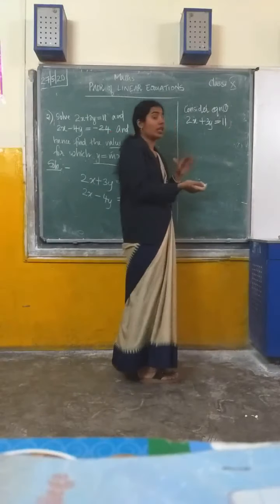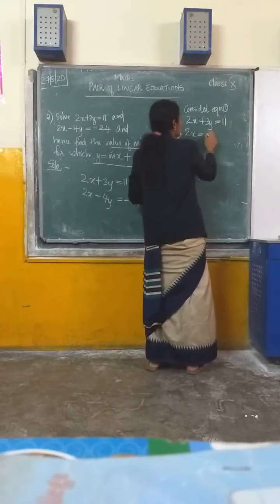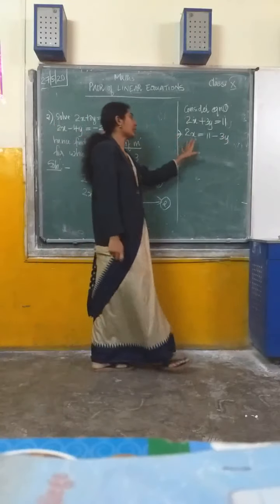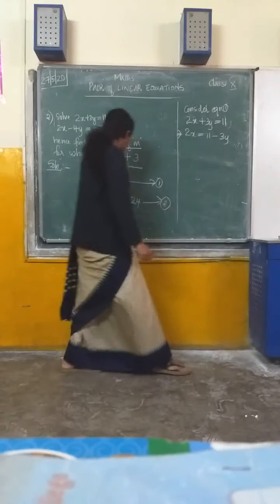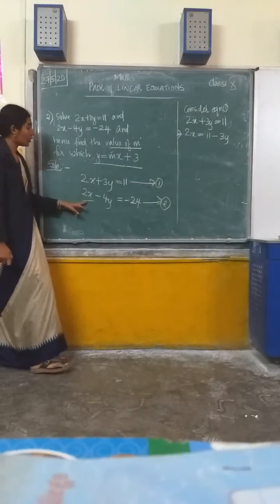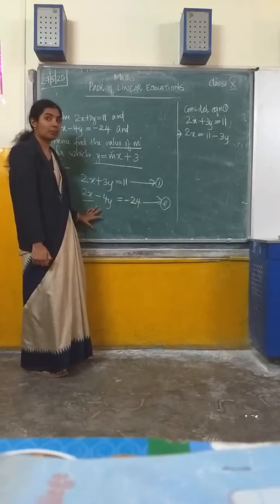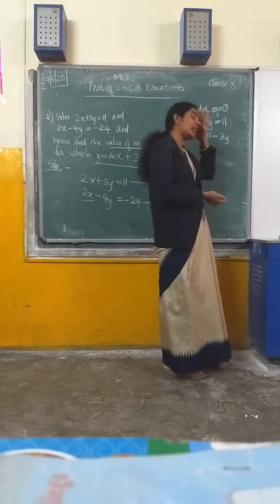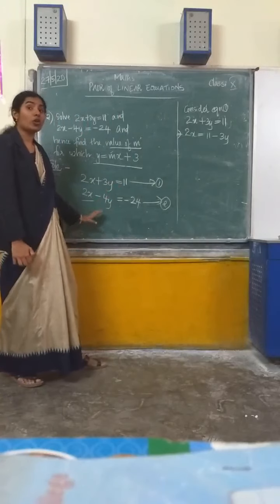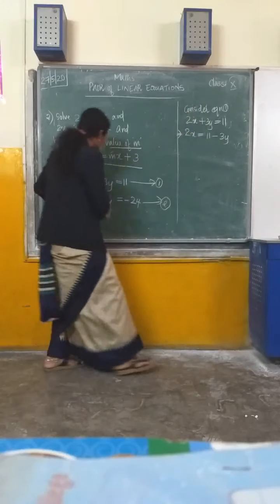Shift 3y to the right side — you will get 2x equal to 11 minus 3y. The reason I am writing 2x in terms of y rather than isolating x is that in equation 2, there is also 2x. So when you substitute this expression for 2x into equation 2, you will directly get the value of y.